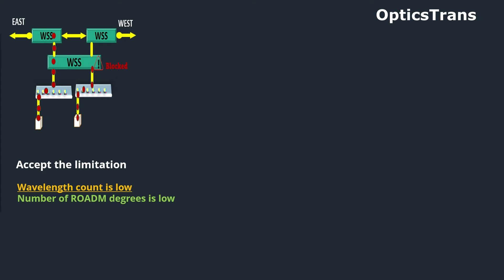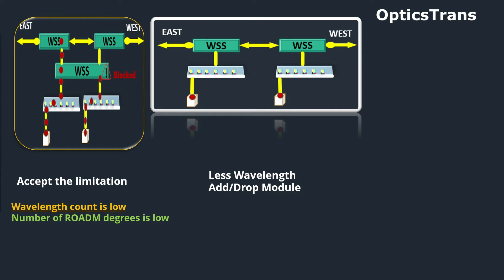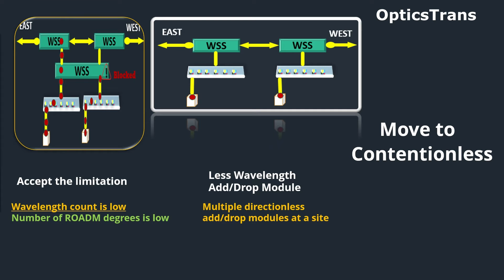Second approach, use multiple wavelength add drop modules, as this wavelength blocking applies when we have single add drop module like in directionless configuration. Third approach, move to contentionless.